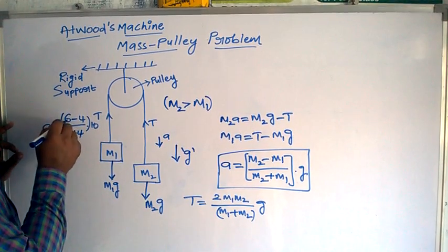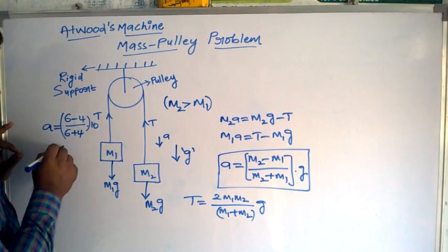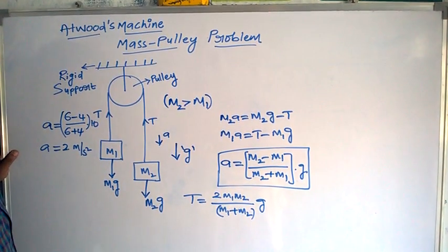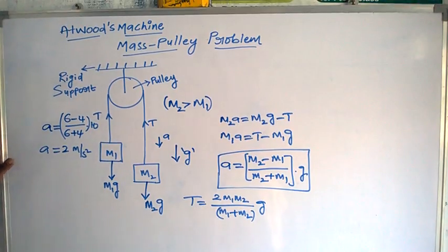This will be 6 minus 4, which is 2, divided by 10, times 10. Then the system moves with acceleration 2 meters per second squared. This is the mass pulley system. Thank you.